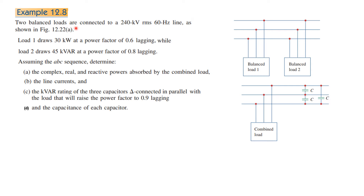Two balanced loads are connected to a 240 kV RMS, 60 Hz line. So 240 kV is the line-to-line voltage and its frequency is 60 Hz. Load 1 draws 30 kW at a power factor of 0.6 lagging and Load 2 draws 45 kVAR at a power factor of 0.8 lagging. Assume ABC sequence.